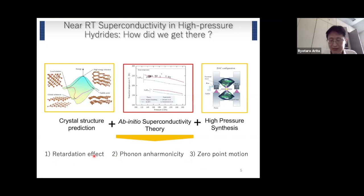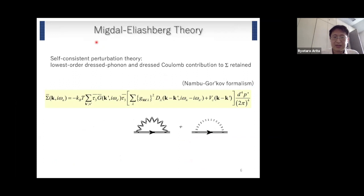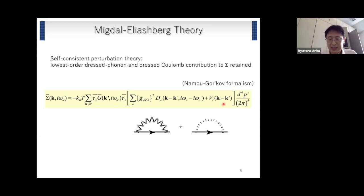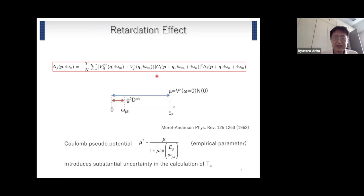Let us first discuss the retardation effect. I'll start with an introduction to Migdal-Eliashberg theory, which is a self-consistent perturbation theory. In the Nambu-Gorkov formalism, we consider the lowest-order direct phonon and direct Coulomb contributions to the self-energy. Here D is the phonon Green's function, g is the electron-phonon coupling constant, and V is the screened Coulomb interaction. When we solve the so-called linearized gap equation — the Migdal-Eliashberg theory — technically we have one problem.